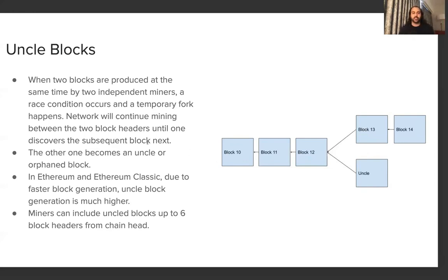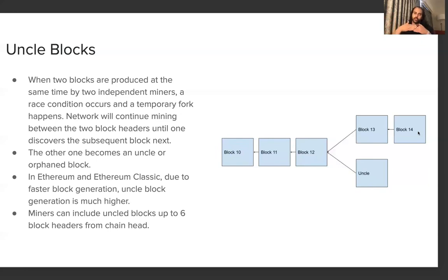In Ethereum and Ethereum Classic, uncle block generation is much higher due to faster block generation — blocks produced every 12 to 15 seconds versus Bitcoin's 10-minute window. Miners can include uncle block headers up to six blocks from the chain head to claim the uncle reward, but after that there's no reward. The uncle rewards keep decreasing for each subsequent block depth.